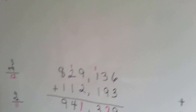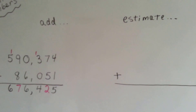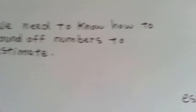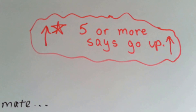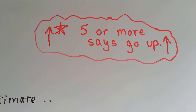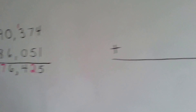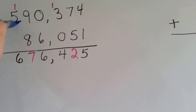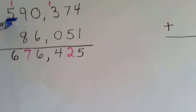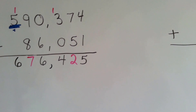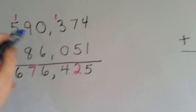Now what would happen if we wanted to estimate this answer? Well, the first thing we need to know is how to round off numbers to estimate. And if you saw the previous videos, you know my red rule: if the number to the right is 5 or more, it says to go up. So we're rounding this place value. The 1 to the right of it is a 9, so that is more than 5, and it's going to tell the 5 to go to a 6.